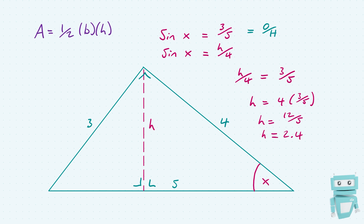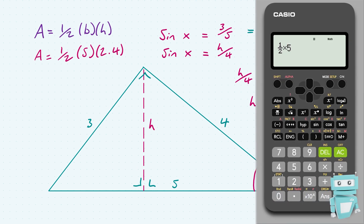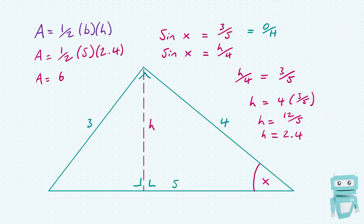Now that we've found h, we can plug it back into our area formula along with the base. The area equals a half times the base, which is 5, times 2.4. Plugging this into our calculator gives us 6. So once again, choosing 5 as the base, the value for the area remains unchanged at 6. I hope this helps you remember that for the area of a triangle, base times height does not depend on the choice of base. See you next time.